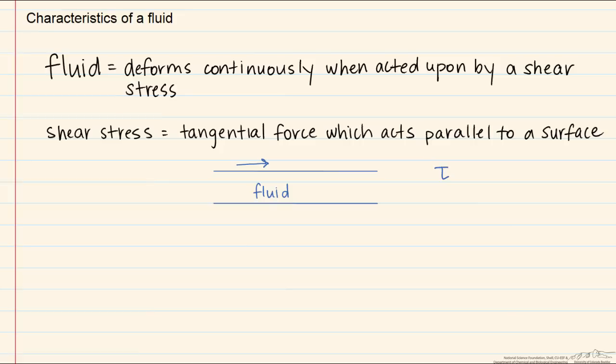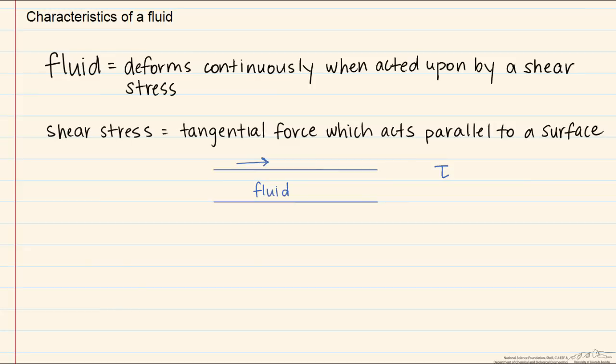We call this shear stress tau. Let's see why it's important that we call it continuous. Pretty much everything deforms. However, a solid deforms to a certain point and then stops. In contrast, a fluid deforms continuously.